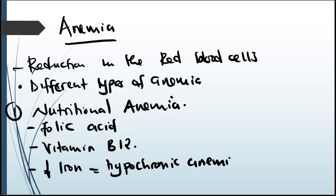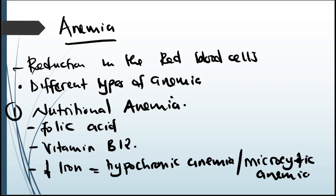Hypochromic anemia is also called microcytic anemia — your red blood cells are going to be very small. So if you have reduced iron intake, you're going to have microcytic anemia. That's nutritional anemias, which is the first type.